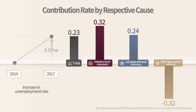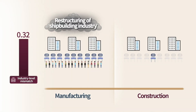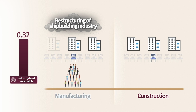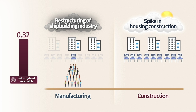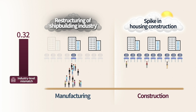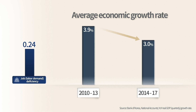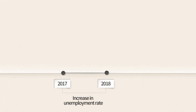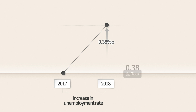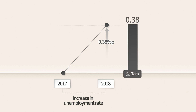The results showed that the main cause of the rising unemployment rate from 2014 to 2017 was industry-level mismatch and the lack of jobs. After 2015, restructuring in the shipbuilding industry scaled down jobs in manufacturing, while the housing boom meant an ample supply in construction. This exacerbated industry-level mismatch since the unemployed in manufacturing were unable to move smoothly into the construction industry. Meanwhile, the economic slowdown which started in 2014 curbed the demand for labor.